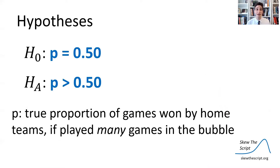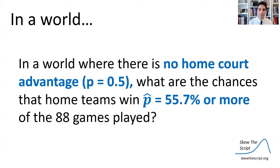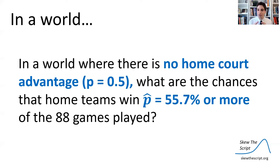The way we can write these hypotheses is: H₀: p = 0.5, meaning if you play many, many games, the true proportion of times the home team would win is about half the time, because there was no home court advantage. And in the alternative hypothesis, H₁: p > 0.5, where there is a home court advantage — if you played many, many games, the home teams would win a bit more often than half the time. So these are our hypotheses expressed mathematically. We can use our 'in a world where' phrasing: in a world where the null is true, how likely was what we observed in the real world? In a world where there is no home court advantage, p = 0.5, what are the chances that the home teams would win 55.7% or more of their games — what we saw in the real world — by chance alone?